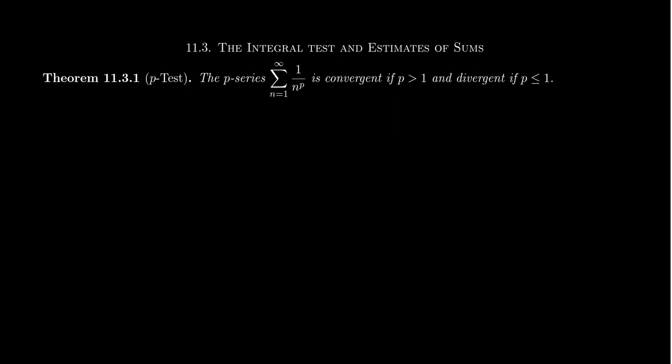A p-series is a series of the form sum from n equals 1 to infinity of 1 over n to the p, where p is some unspecified parameter. The p-test tells us that a p-series will be convergent exactly when p is greater than 1, and it will be divergent when p is less than or equal to 1.